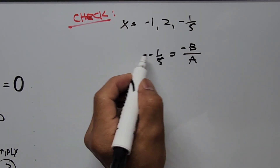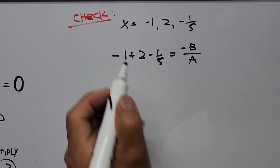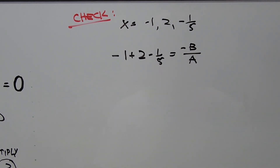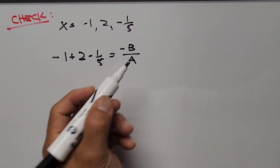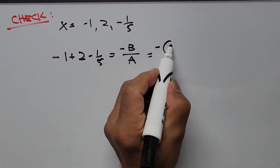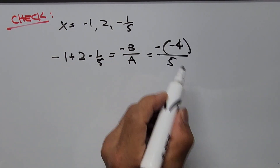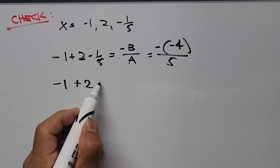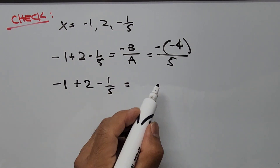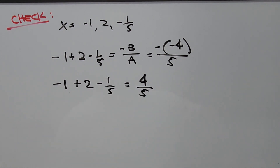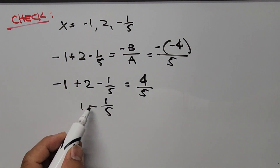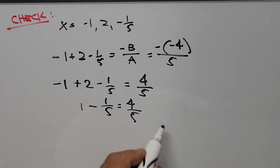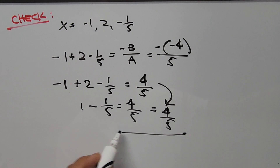So we compute: (−1/5) + 2 + (−1) = negative b/a = negative 4/5. But since b = 4 and a = 5, negative b/a = negative(4)/5, and the two negatives make it positive 4/5. Simplifying the left side: −1 + 2 = 1, then 1 − 1/5 = 5/5 − 1/5 = 4/5. This equals 4/5, confirming our values of x are all correct.